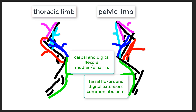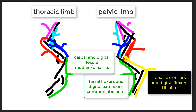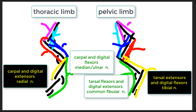Another group originates from the distal femur and caudal tibia/fibula, crossing the plantar aspect of the tarsal and interdigital joints — these are the tarsal extensors and interdigital flexors, innervated by the tibial nerve. Their thoracic limb analogs arise from the lateral epicondylar area of the humerus and cross the dorsal aspect of the carpal and interdigital joints; these are the carpal and interdigital extensors, innervated by the radial nerve.